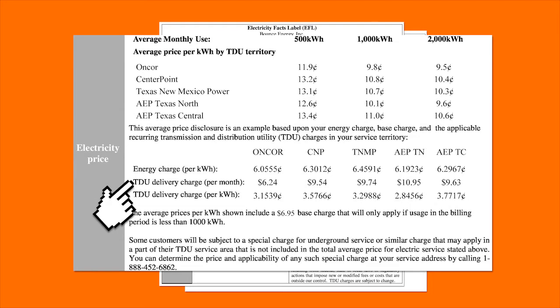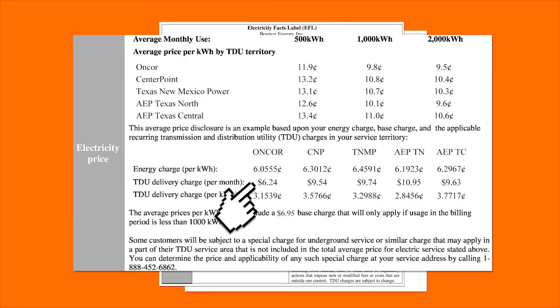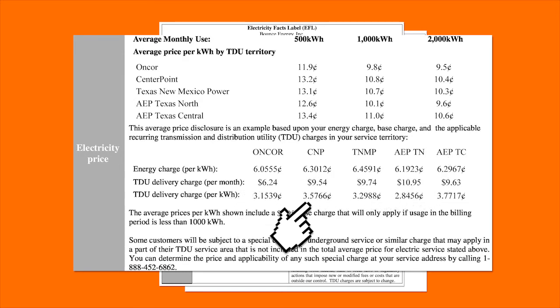TDU delivery charges vary for each territory. These fees are broken down into two types: monthly recurring fees that are fixed, and others that are based on your energy usage.